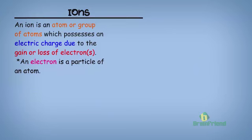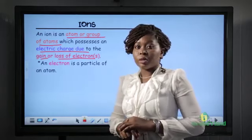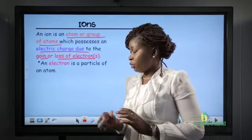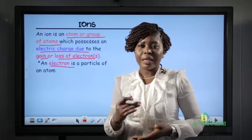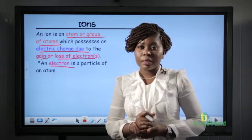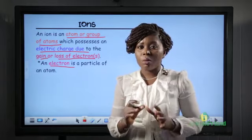An ion is an atom or group of atoms which possess an electric charge due to the gain or loss of electrons. We are going to be talking more about electrons in our next class, but right now it's important to know that an electron is a particle found in an atom. So an ion is formed from the atom — if an atom gains or loses electrons, it becomes an ion.